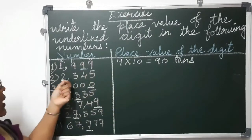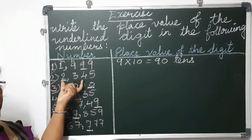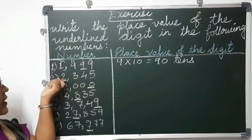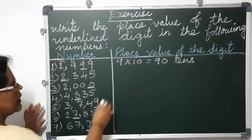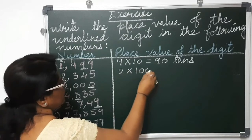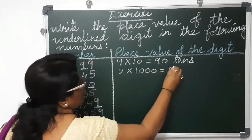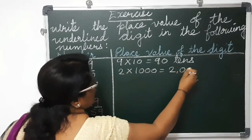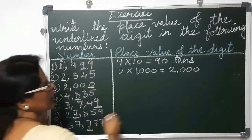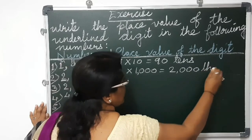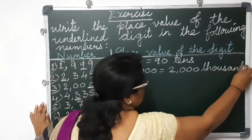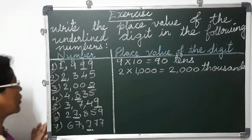The second number is a 4 digit number: units, tens, hundreds and thousands. So 2 is in thousands place. 2 into 1,000 equals 2,000. The place value is thousands. The underlined digit in the first number was 9 — tens place value. The underlined digit in the second number is 2 — thousands place value.